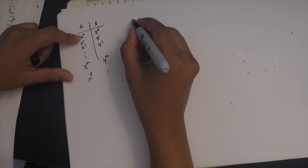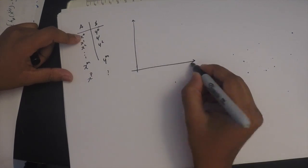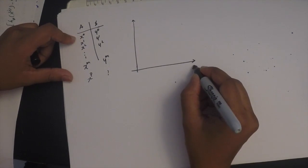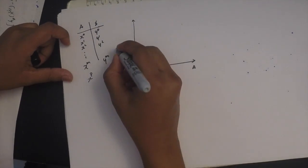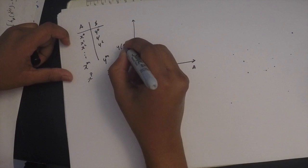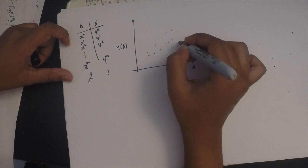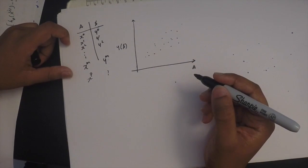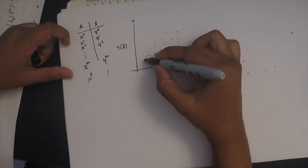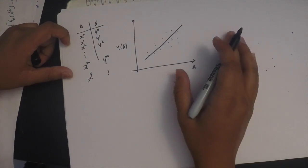If I were to fit these data points on a graph, it would look something like this. Let's say you plot all the areas on the X-axis and on the Y-axis you plot the price. The data points might look something like this, assuming that as the area increases, the price value increases. So you're trying to fit a line or a curve between these data points such that you minimize the error.